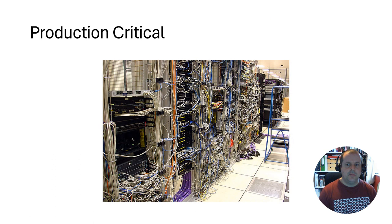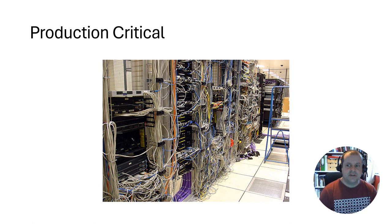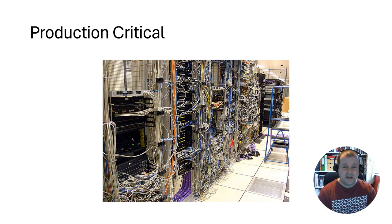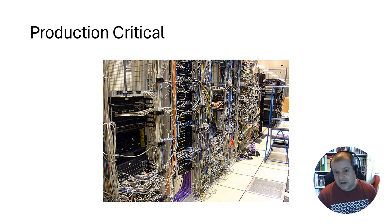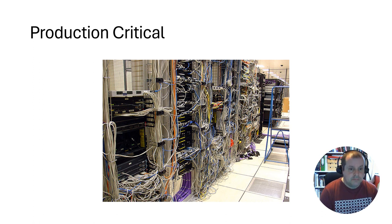Let's think about what it means to have something running in production. Even for a small business, production is really critical — especially for software-as-a-service. Changing anything in production is a risk. For some businesses, downtime would be a major risk to existing customers and their ability to do their job, and to your reputation, which might affect future sales. If you break something multiple times, customers stop trusting you and may go to a competitor.